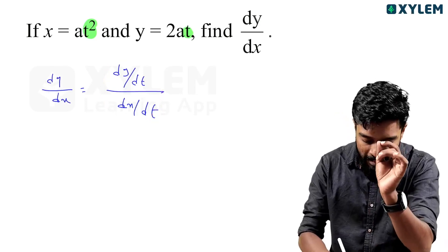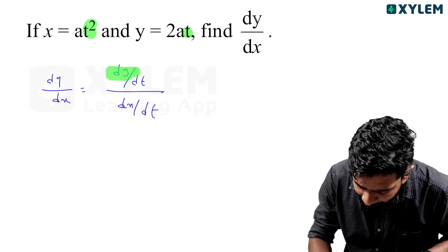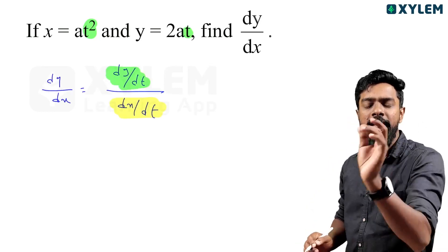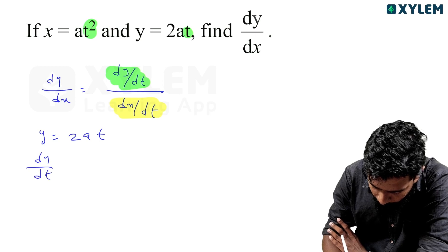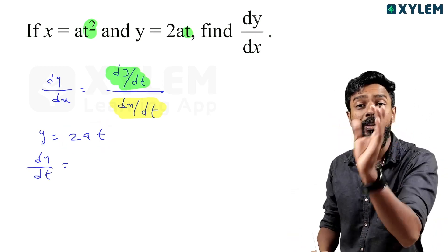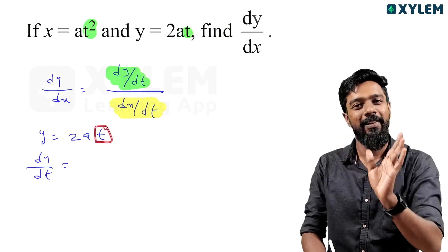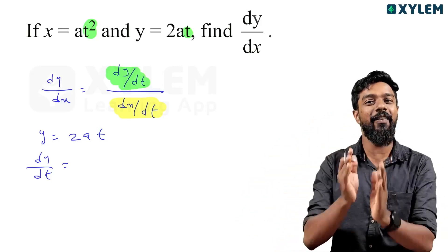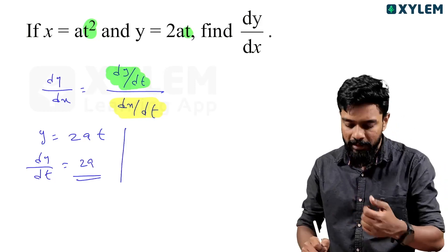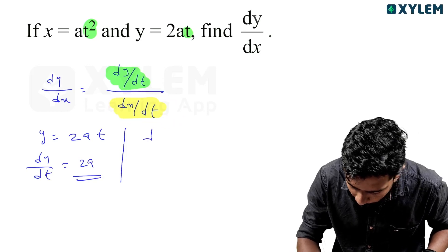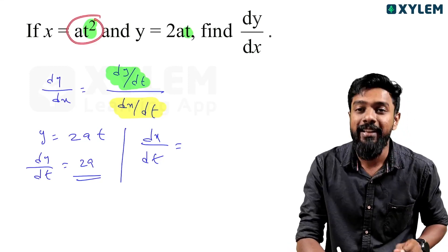The fraction remains the same always: dy by dx. This is dy by dx — that is, dy by dt divided by dx by dt. If dy by dt, then y equals 2at. The same is dy by dt. I will now find dx by dt. x is at squared.